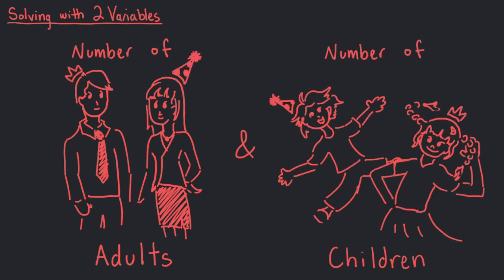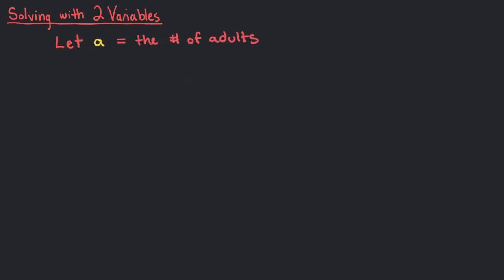In this problem, we have to figure out the number of adults at this party and the number of children. Let's assign one variable for each unknown. Let a equal the number of adults and c equal the number of children.